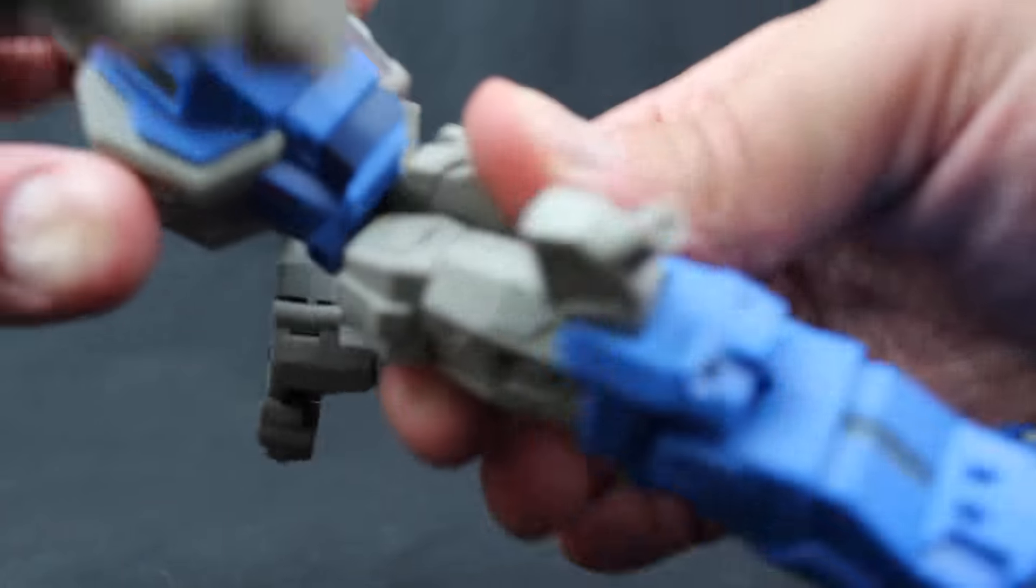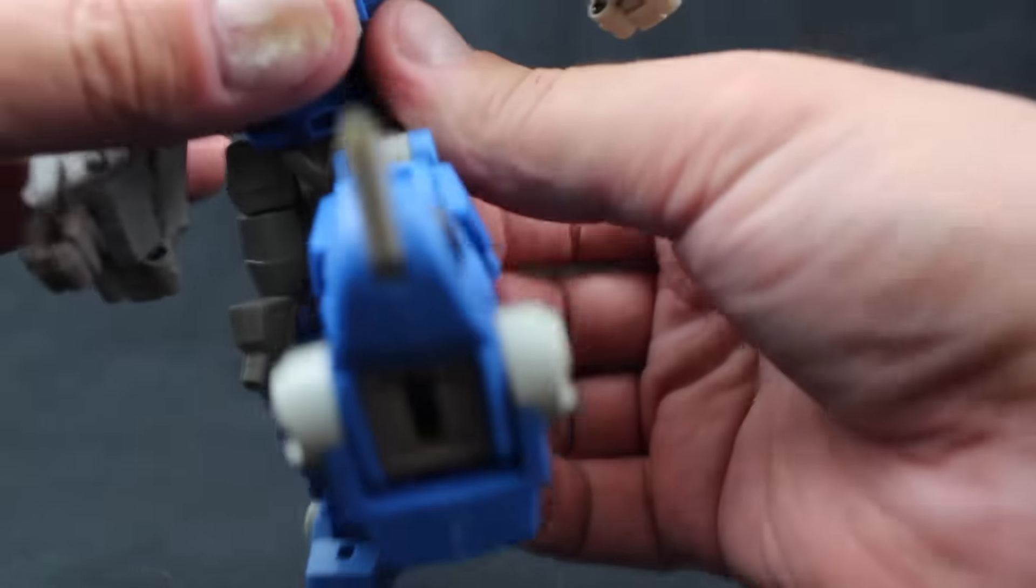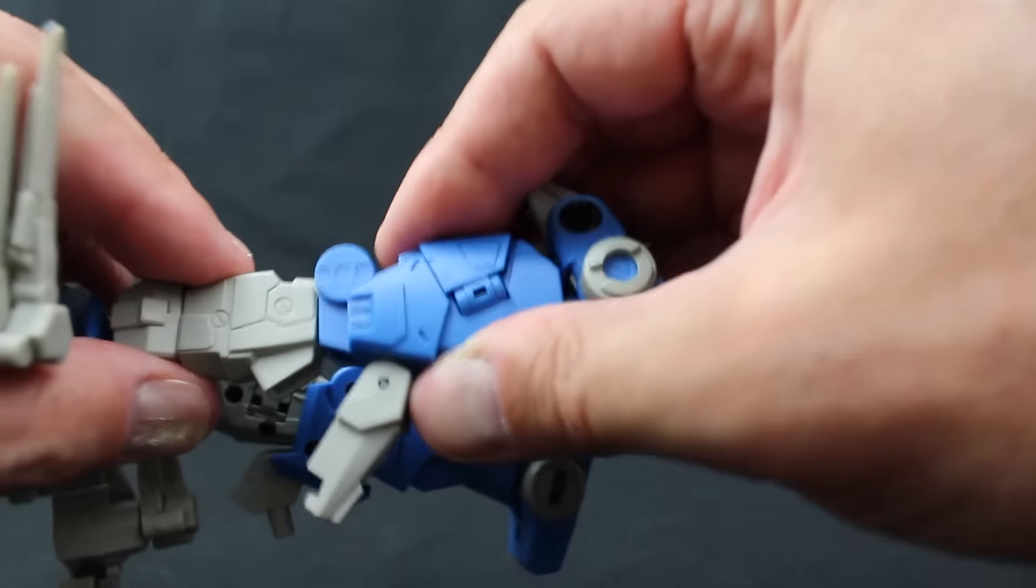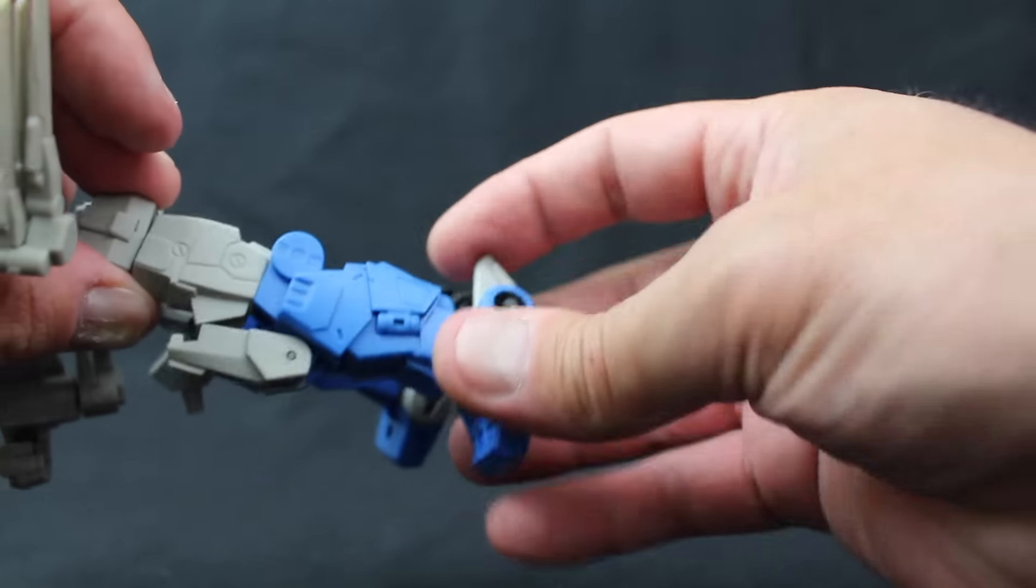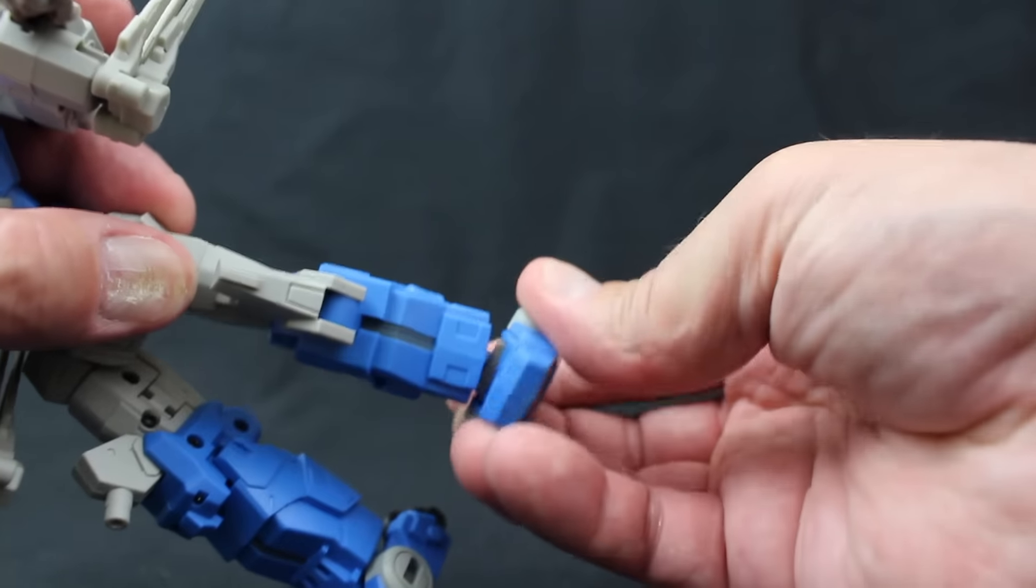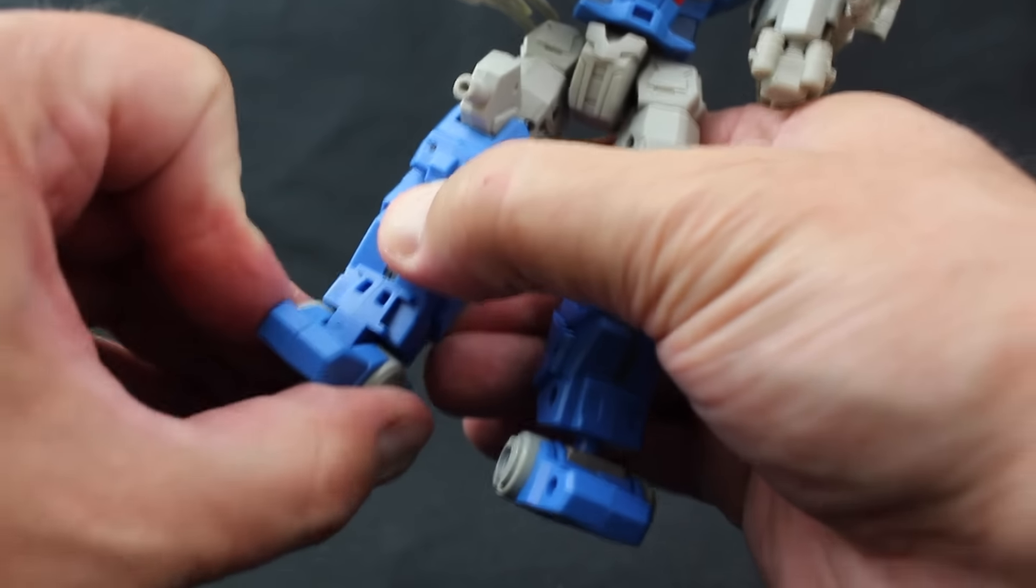The waist can rotate all the way around. The hips are on nice smooth ratchets that rotate and move outwardly. There is a thigh swivel and a single knee joint on a hinge. The right and left feet are asymmetrical. The left ankle is on a ball joint and the right has minimal ankle tilt but does have forward and backward movement.